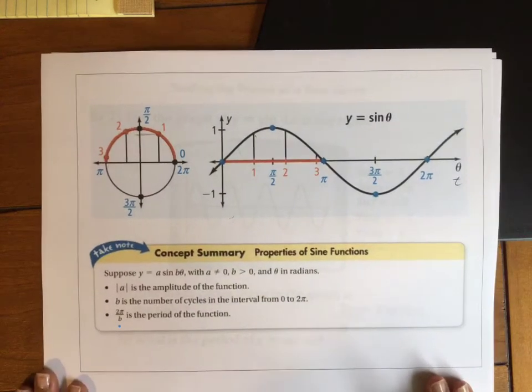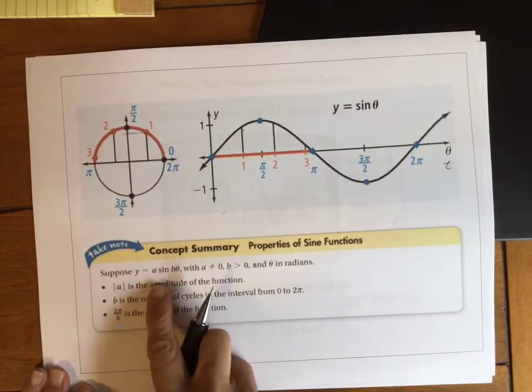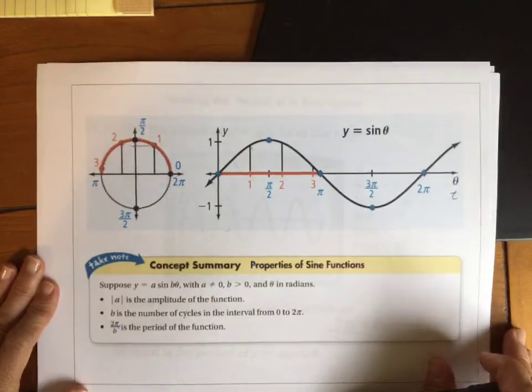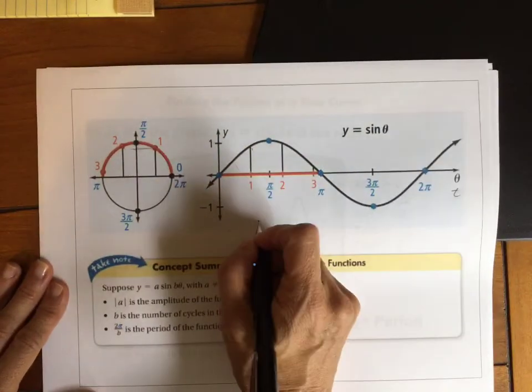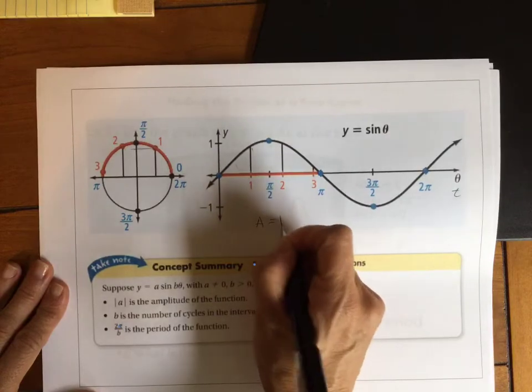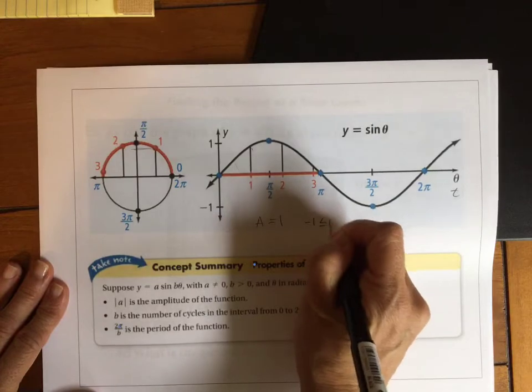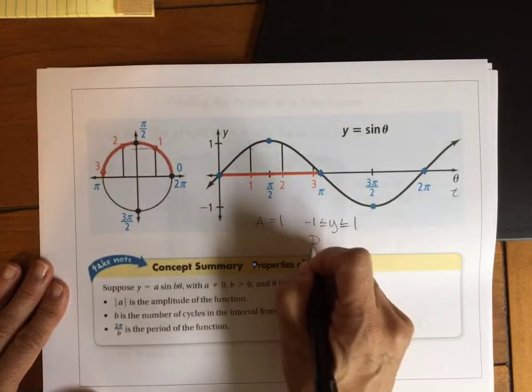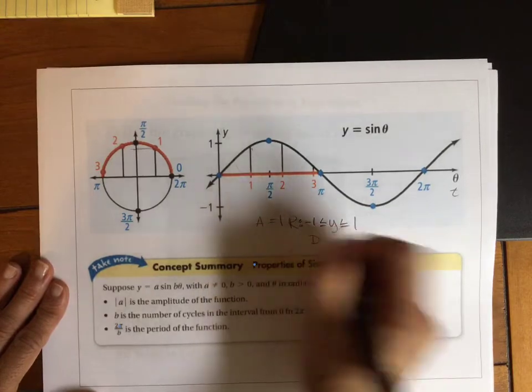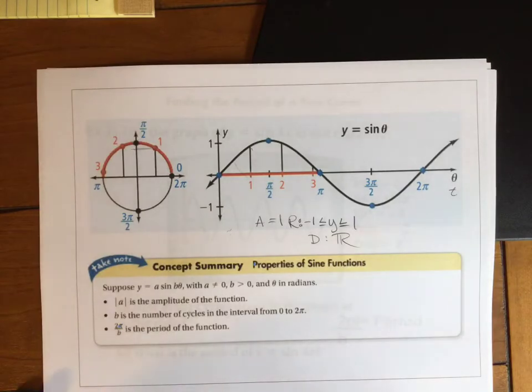There are some key points, so you might want to make sure you get all this in your notes. If this is the parent function of sine theta, notice that I have an amplitude of 1 that would make my range from negative 1 up to positive 1. My domain would be all real numbers. This goes on to infinity, and it looks like a wave.